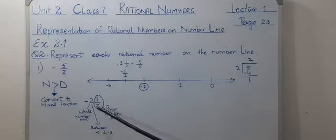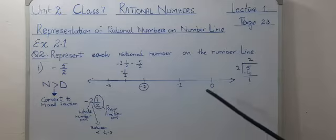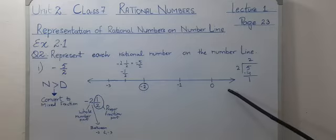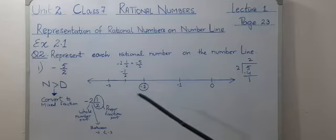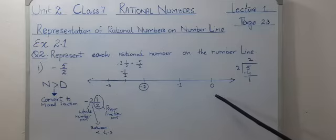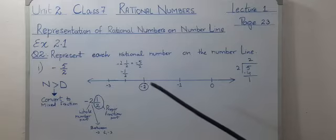Now this lies between minus 2 and minus 3. Now move to the number line. Minus sign is here, so we will move to the negative direction, negative integers direction.